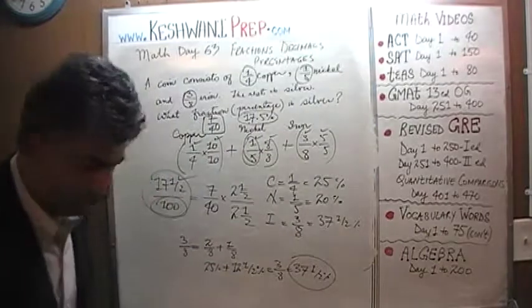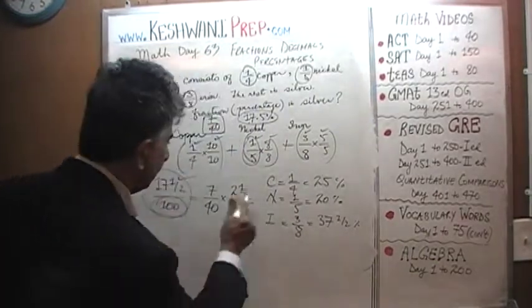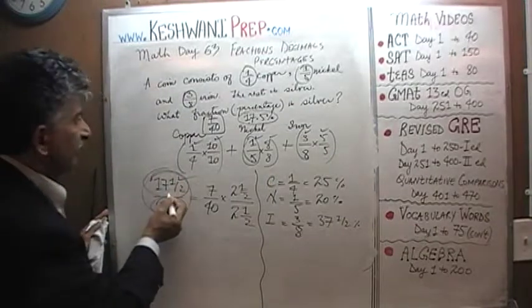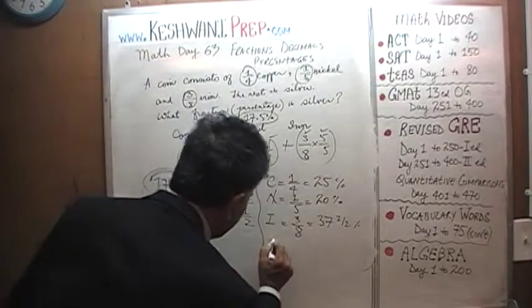We're not quite done yet. Finally, we have to add up. Let's keep everything separate here, it's getting too crowded. Let's have a demarcation here. Now we have to add up the 17.5% that we're claiming is silver to make sure they add up to 100.